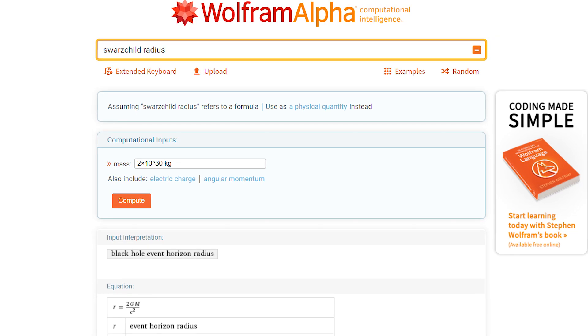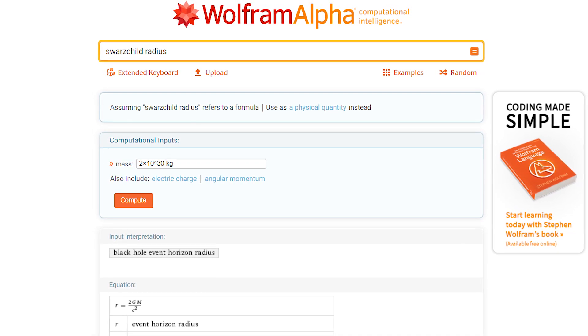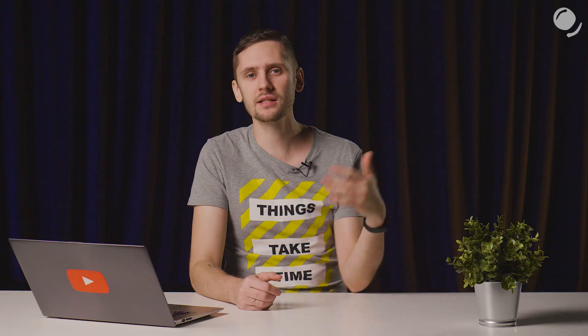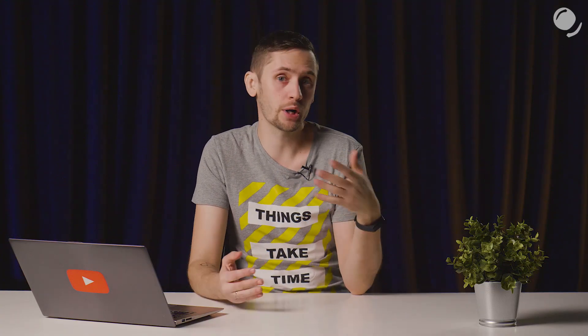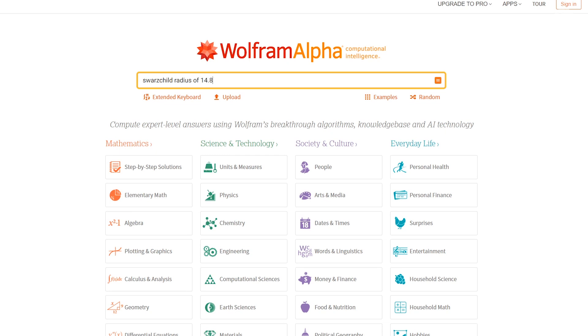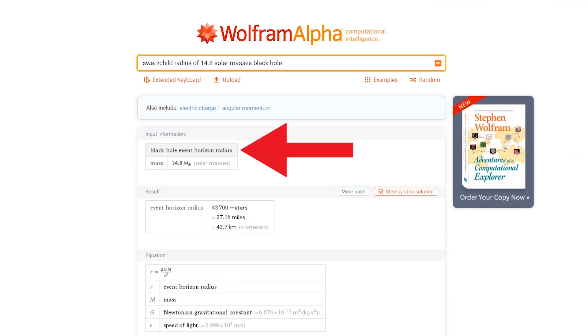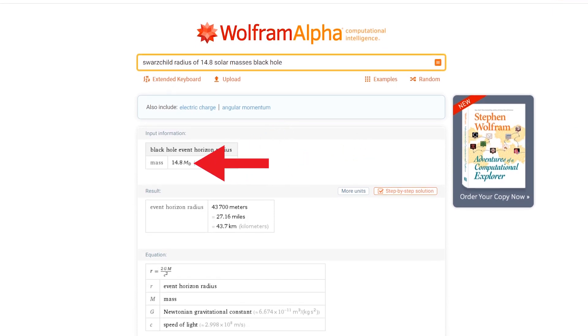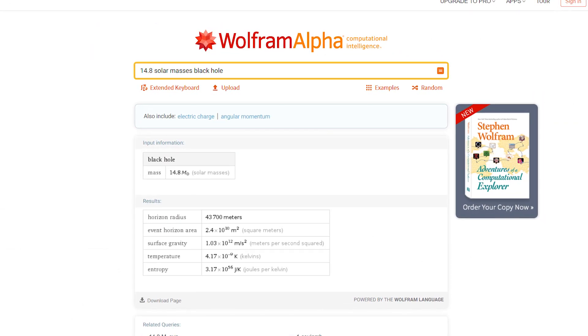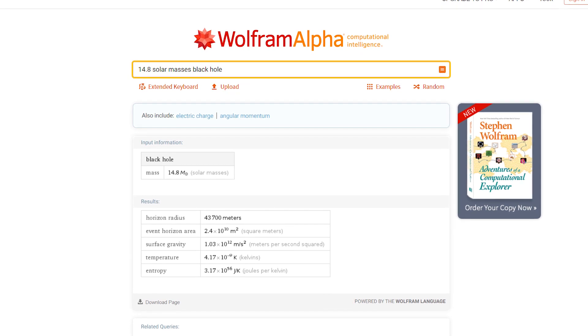Knowing the mass, we can figure out the Schwarzschild radius using this formula, or you can use this website for convenience, especially if you don't know the formulas, and also you can learn them afterwards. Here the system will try to interpret your request. Let's type in Schwarzschild radius of 14.8 solar masses black hole. We can see that the system understood our request. Here we can see event horizon radius, masses written here, and the formula and the list of variables, and most importantly the result: 43,700 meters.